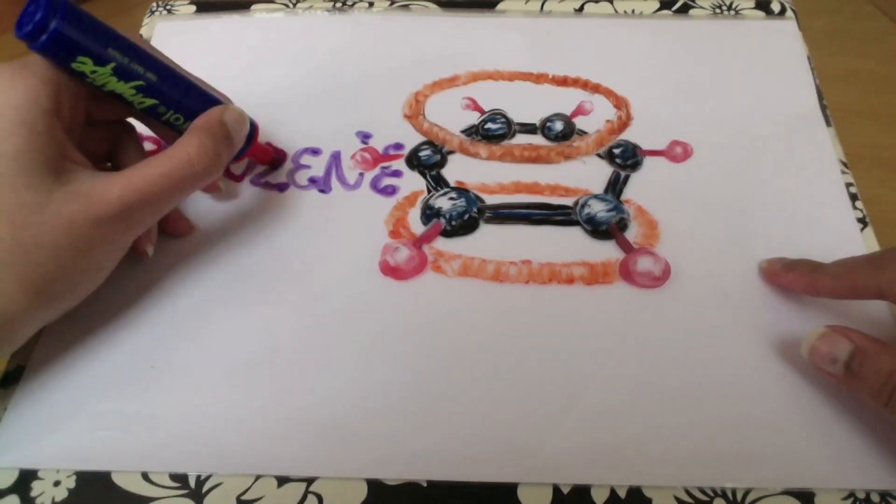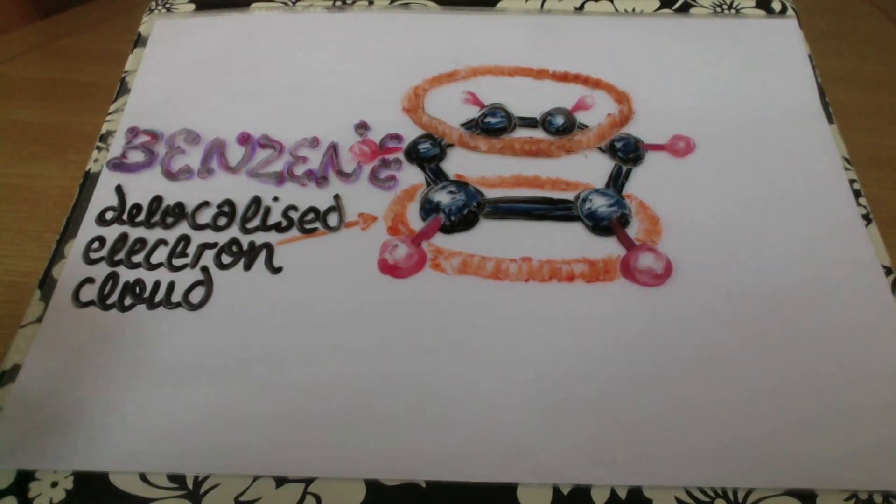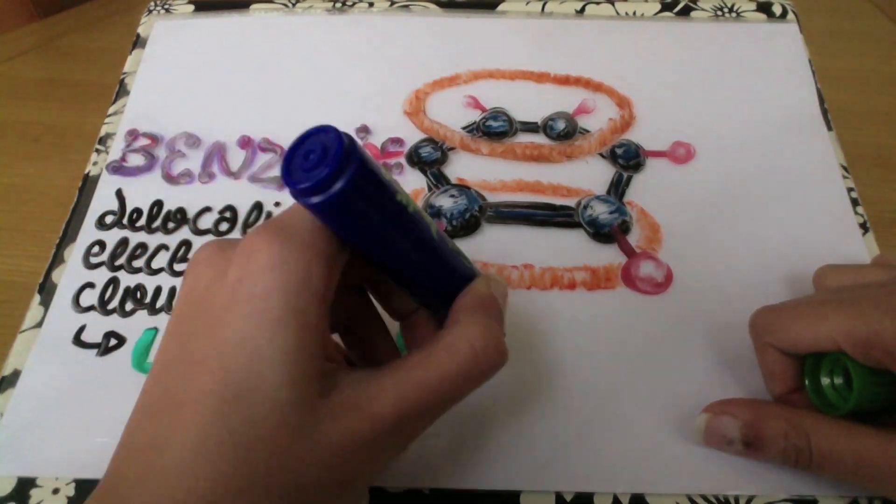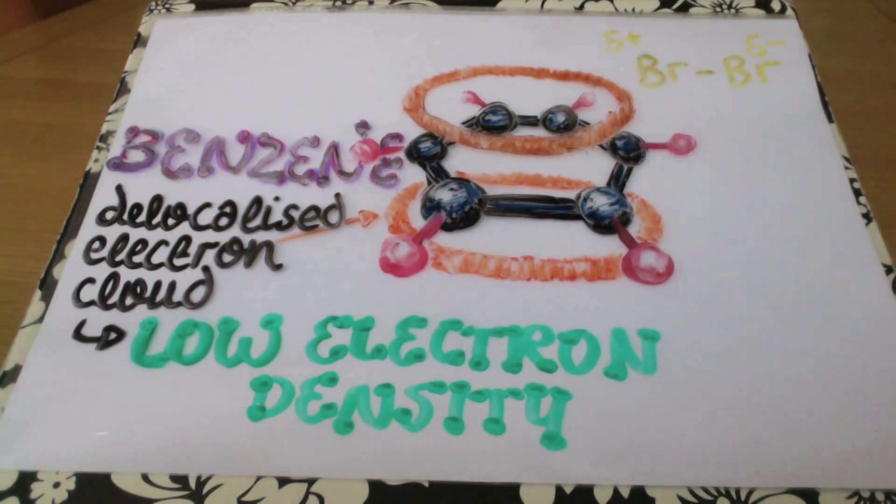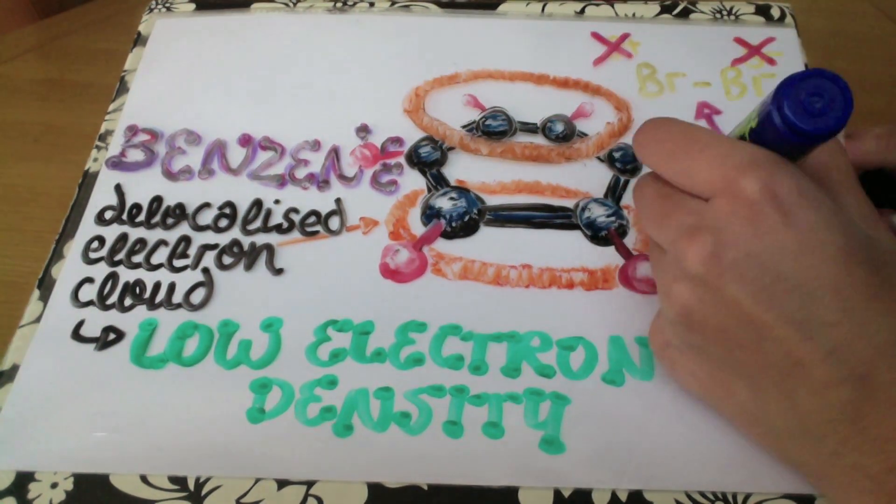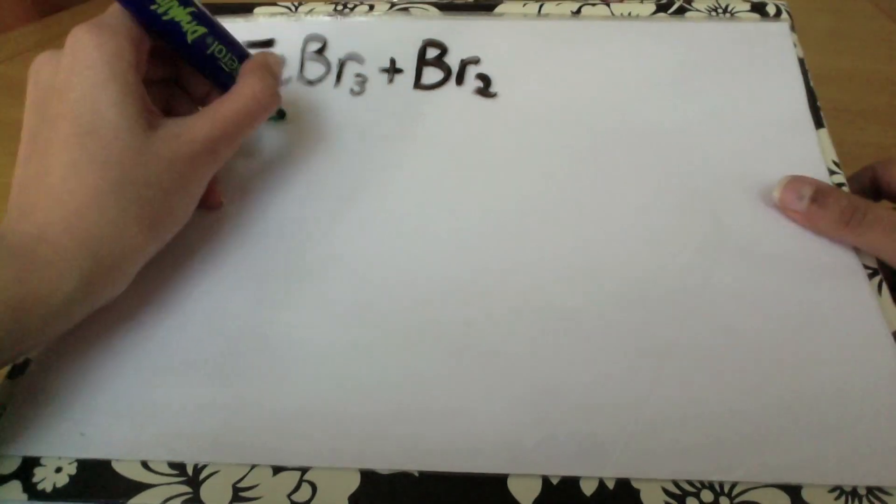The first point you want to raise is that in benzene, the electrons are delocalized in a pi electron cloud. That means benzene has a really low electron density, and because it has low electron density, it's not able to induce a dipole in a bromine molecule. For that reason, you need a catalyst for the reaction.